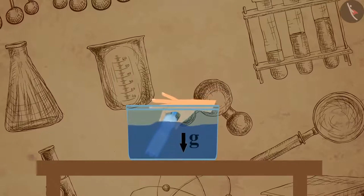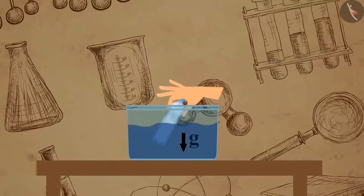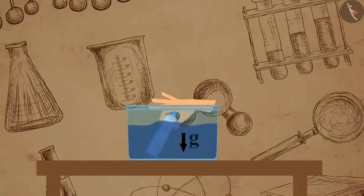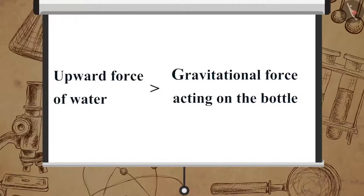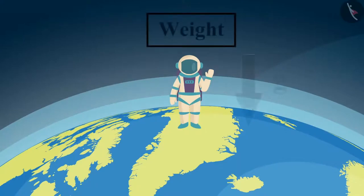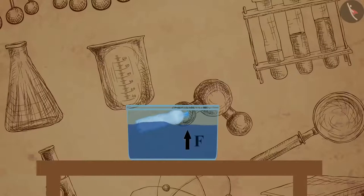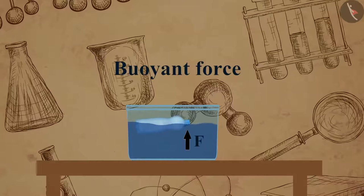Is gravitational force not acting on the bottle? Why does it keep bouncing back to the surface? Gravitational force is acting on the bottle in the downward direction, and the water exerts an upward force on the bottom. As a result, the bottle keeps floating. The upward force of water is more than the gravitational force acting on the bottle — more than its weight. This upward force is called buoyant force or upthrust, and this property is known as buoyancy.